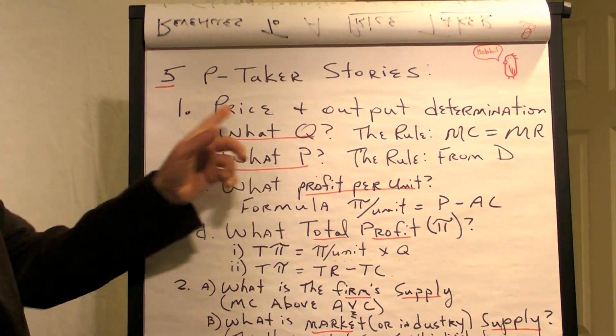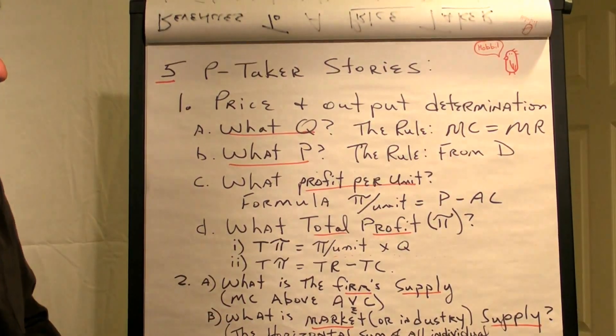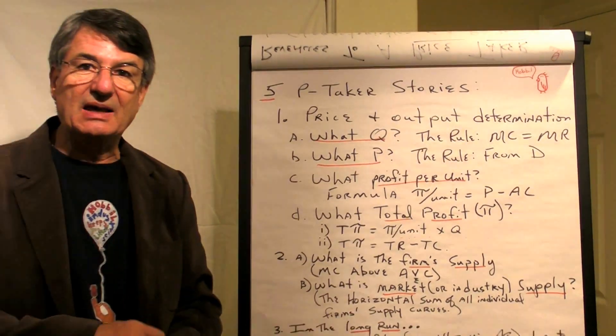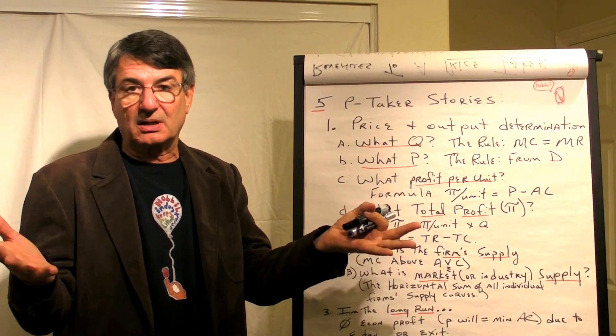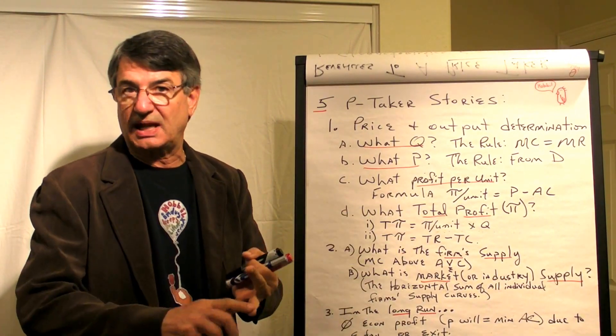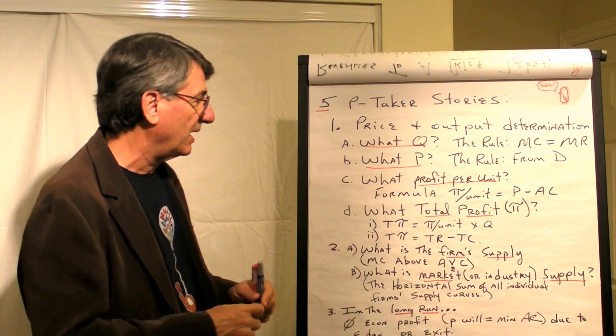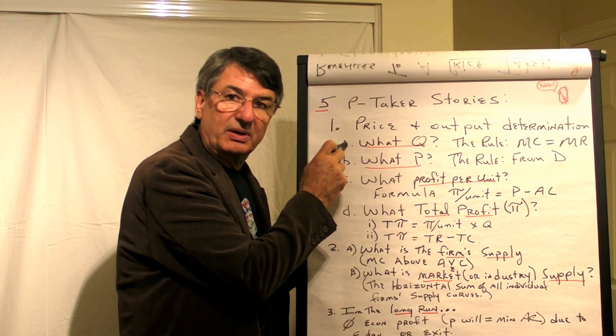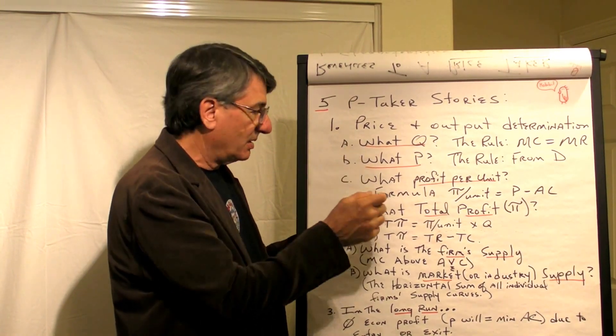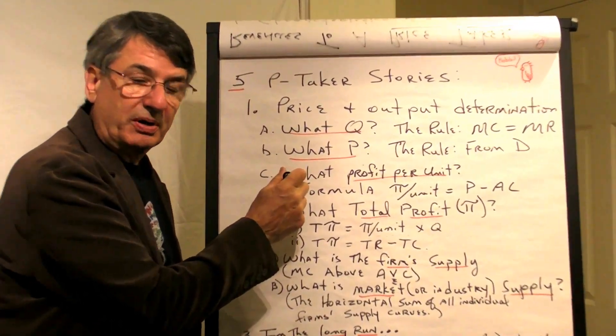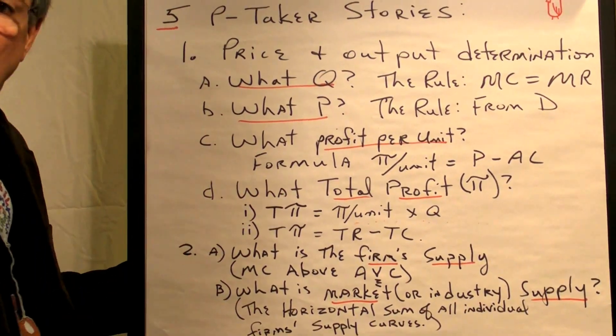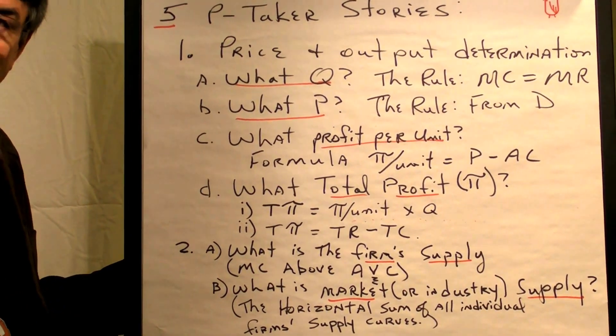The first story is price and output determination. This is a situation in which I give you a firm's cost, either curves or a table of their costs, and then give you any price, and you tell me what quantity the firm will produce, what price it will charge, what will be the profit per unit, and what will be total profit.